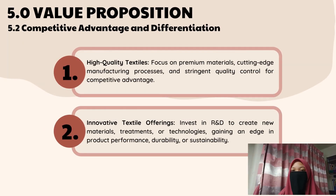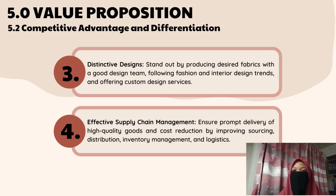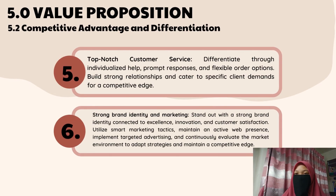Moving on to competitive advantage and differentiation. First, high-quality textiles: premium materials, advanced manufacturing, and strict quality control. Second, innovative textile offerings: R&D investment for cutting-edge products, performance, and sustainability. Third, distinctive designs: standing out with trendy fabrics, custom services, and a skilled design team. Fourth, efficient supply chain management: delivering quality products on time while minimizing costs through improved sourcing, inventory management, and logistics. Fifth, excellent customer service: personalized assistance, quick responses, and flexible order options. Sixth, powerful brand and marketing: a strong brand tied to excellence, innovation, and customer satisfaction through smart marketing and a strong online presence.